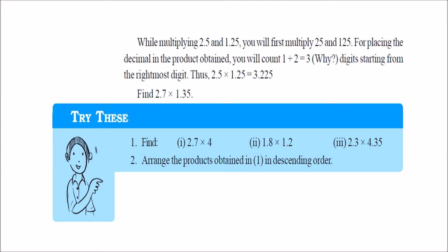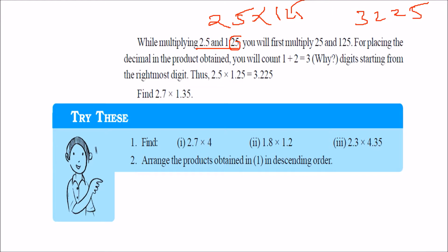Let us take one more example: multiply 2.5 by 1.25. You just multiply 25 by 125, and you get a certain value — 3125. Now, where to place the decimal? 2.5 has one value after decimal and 1.25 has two values, so there are three values after decimal in total. Count 1, 2, 3 from the right and place the decimal there — giving 3.125.